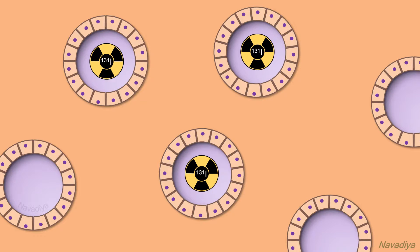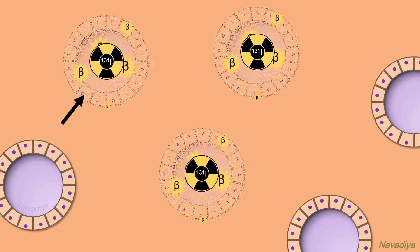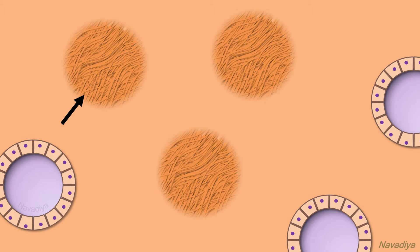Talking about mechanism of action: they emit beta particles which penetrate from 0.5 to 2 mm deep and destroy follicular cells from inside. The cells undergo pyknosis, necrosis, and there will be eventual fibrosis of the gland.